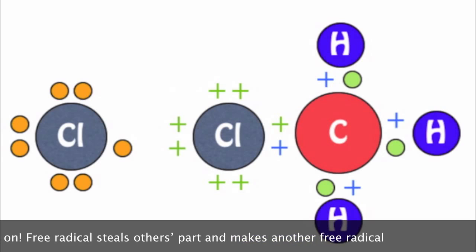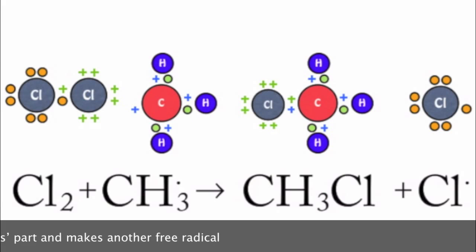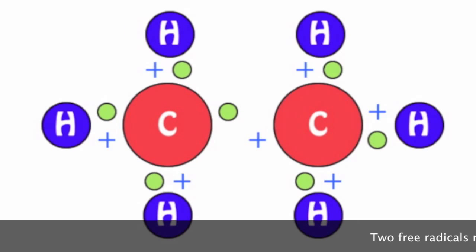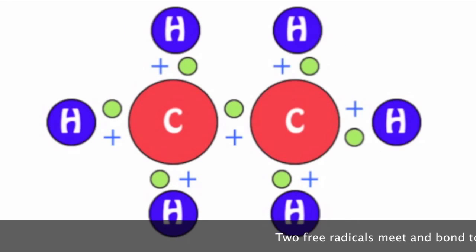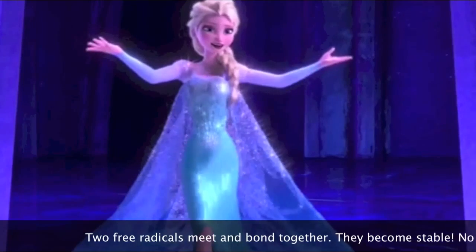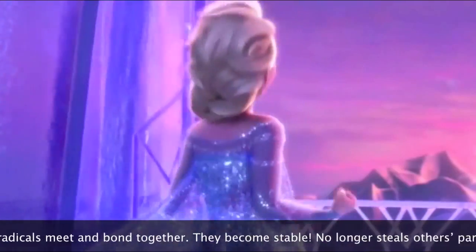The free radical steals another part and makes another free radical, cycling on until termination ends it. Two free radicals meet and bond together, and they become stable.